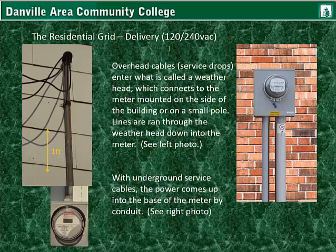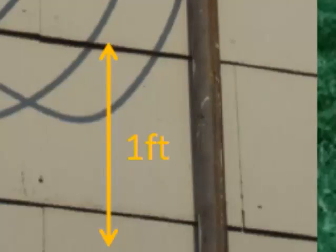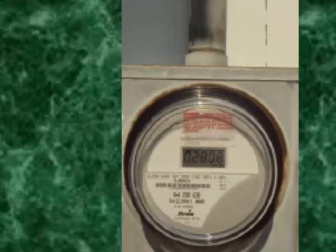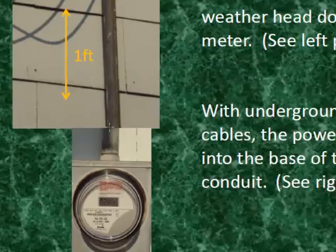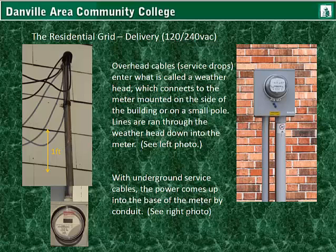Here in the U.S. we deliver 120 and 240 volts AC. The transformer is a center tap type, so two of the lines are connected to the entire secondary of the transformer, so it gets all of the voltage. Overhead cables, or service drops, enter what is called a weather head. It connects to the meter mounted on the side of a building, and oftentimes it's mounted to a small pole near the home. With underground service cables, the power comes up into the base of the meter by conduit.